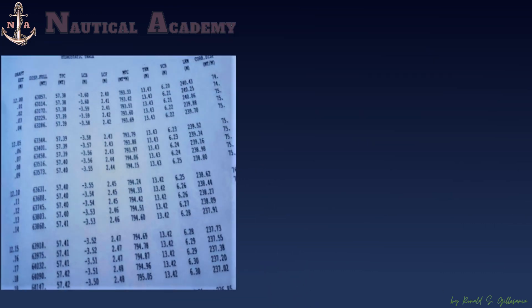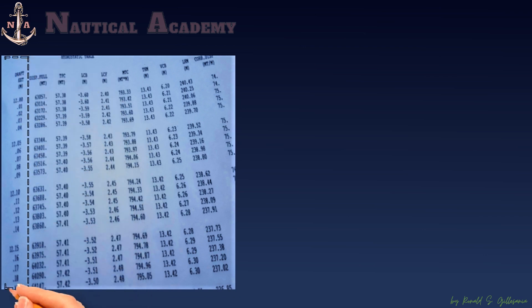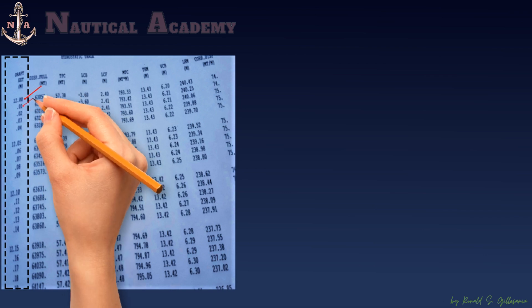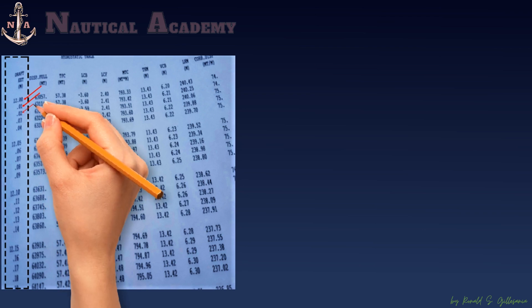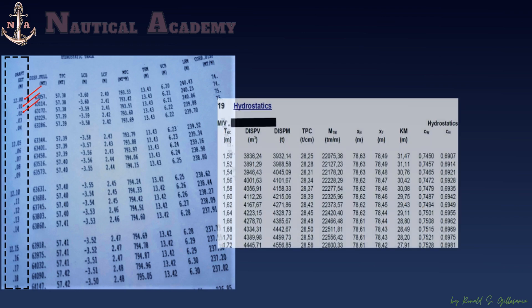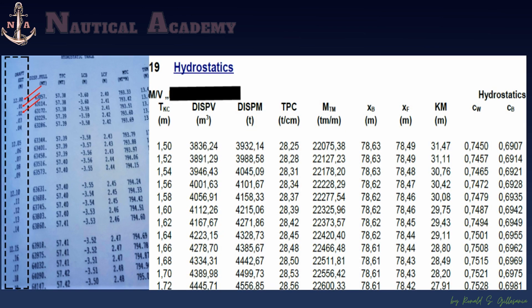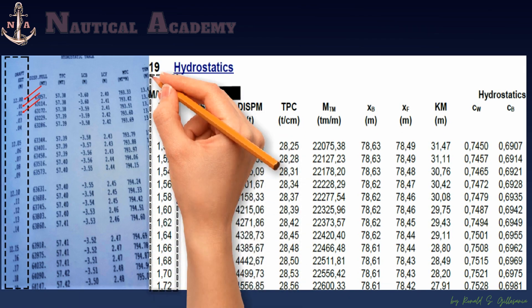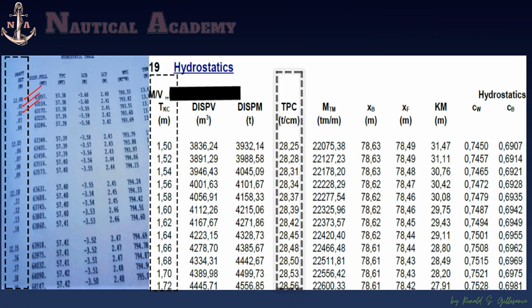Before proceeding, here are other types of hydrostatic tables that might be available on board. One type has draft intervals of every 1 centimeter, starting from 12.0 meters, then 12.01 meters, 12.02 meters, and so on — making interpolation unnecessary. Another type has a draft interval of every 2 centimeters, so TPC can also be determined easily by inspection without interpolation.